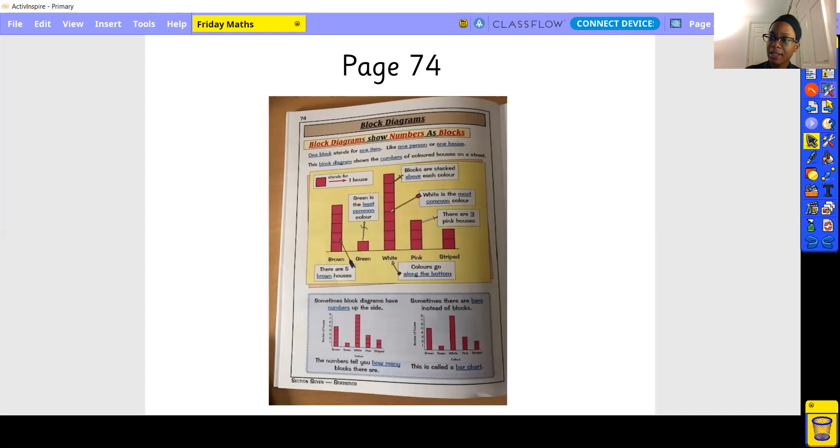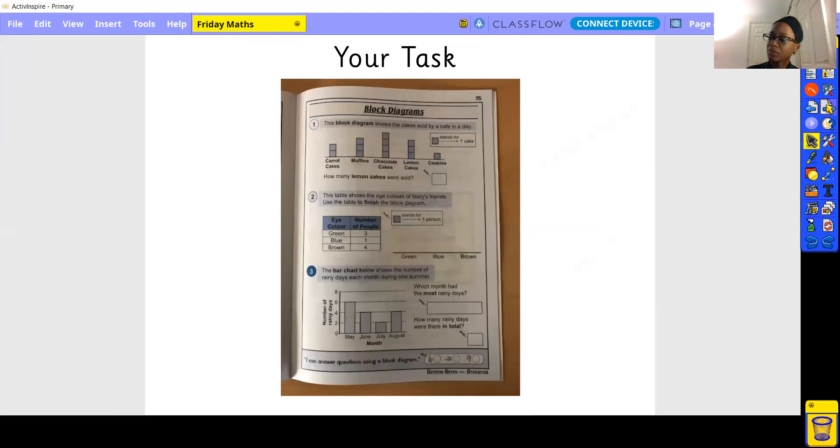Now let's see how that's going to link and help with your tasks today. So this block diagram shows cakes sold by a cafe in a day. And we can see the block stands for one cake. So how many lemon cakes were sold? Okay, take a look at that question, pop your answer into the good old box like you know how.